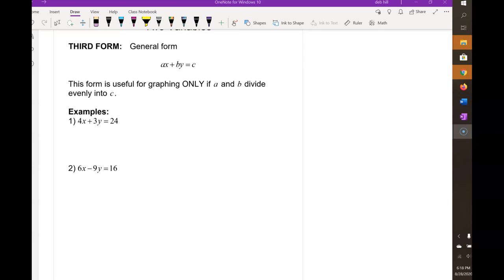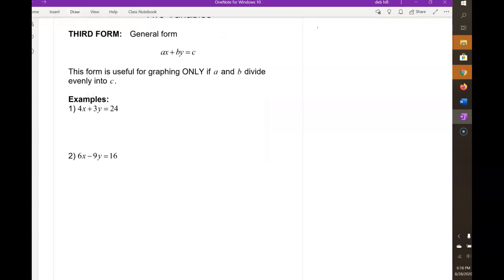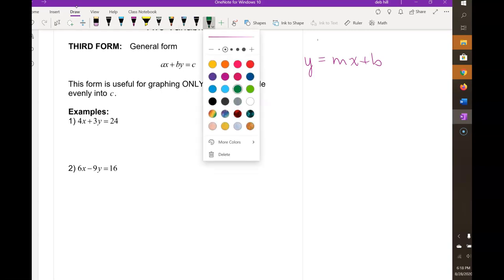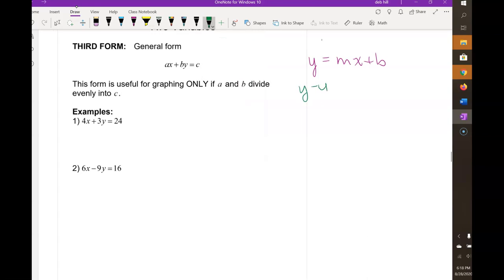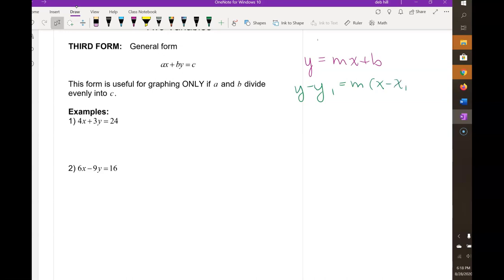We're talking about the three different forms of the equation of a line. We looked at y equals mx plus b, which was called the slope-intercept form, and then we had y minus y1 equals m times x minus x1, which was the point-slope form.